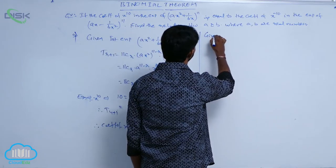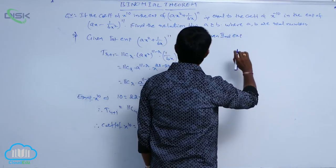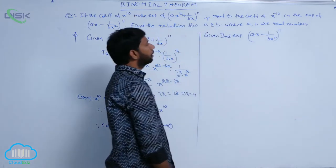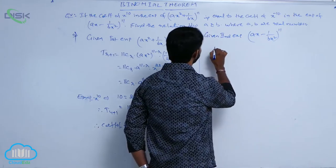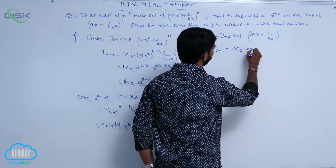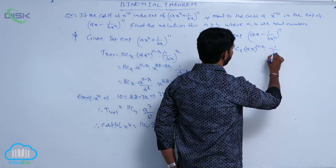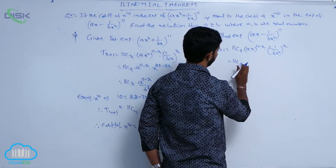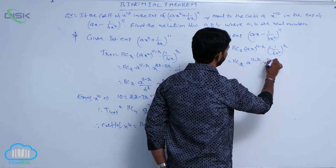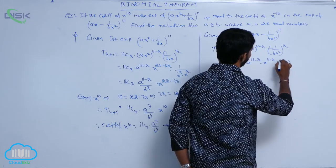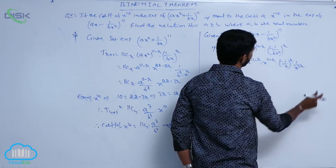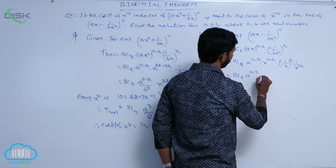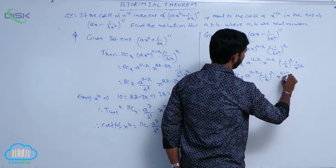The second expansion is (ax - 1/bx²)^11. Write the general term T(r+1) = 11Cr · (ax)^(11-r) · (-1/bx²)^r = 11Cr · a^(11-r) · (-1/b)^r · x^(11-3r).